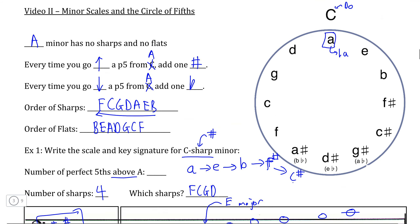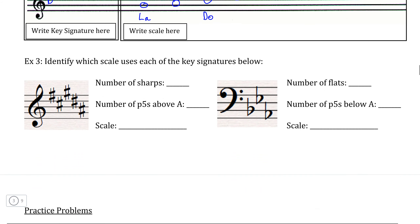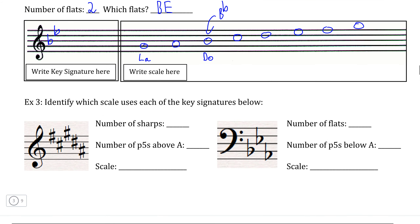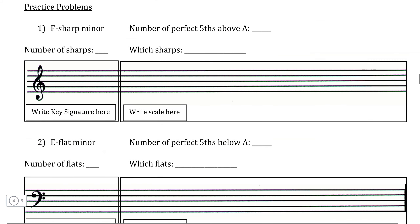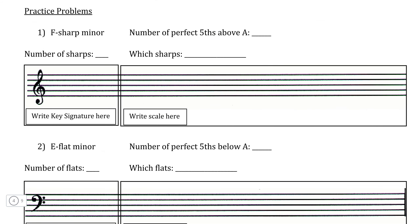Before we move on to the next two videos that look at variations on the natural minor scale, try the practice problems below. First, by using the circle of fifths to directly determine what the minor scale is going to be based on the number of sharps and flats in these key signatures. And then see if you can use the circle of fifths to directly determine both the key signature and the pitch composition of the scale for each of the practice examples below.